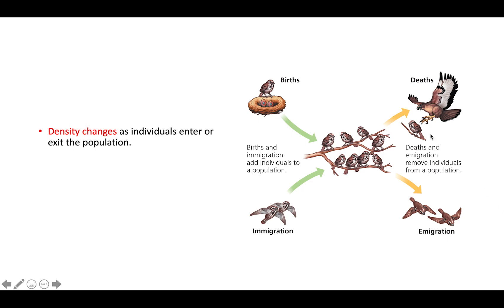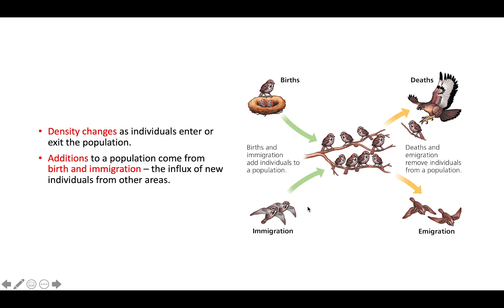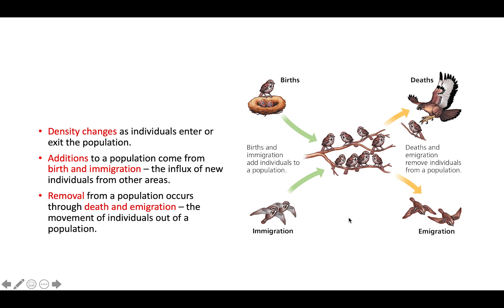Over in this diagram, it's a visual depiction of how populations grow and shrink. Additions to a population come from births and immigration, where immigration means individuals coming from a different area and moving into this population. Removal of members occurs through death and emigration. These two terms can be confused because they sound almost identical. A helpful way to remember that emigration means to leave a population is that it starts with an E — you can think E for exit, so those individuals are exiting the population and going to a new area.